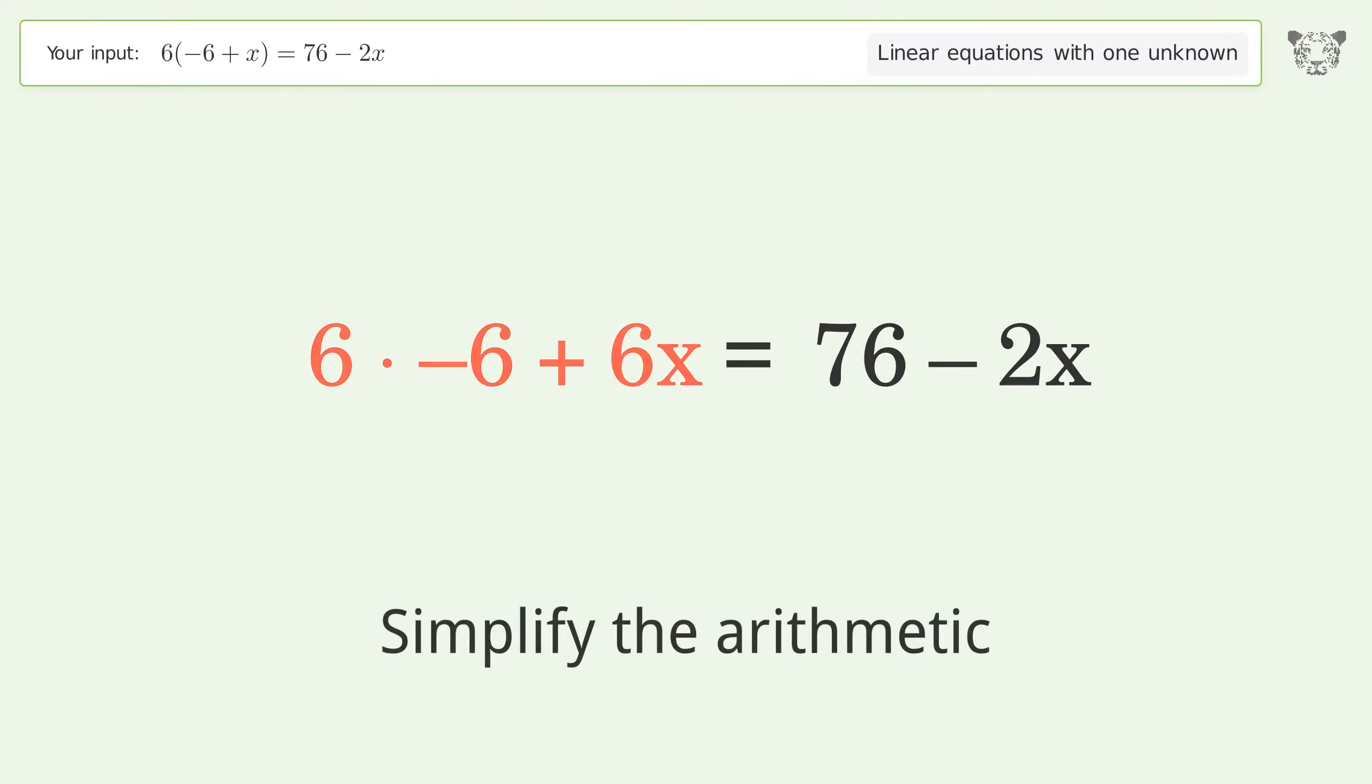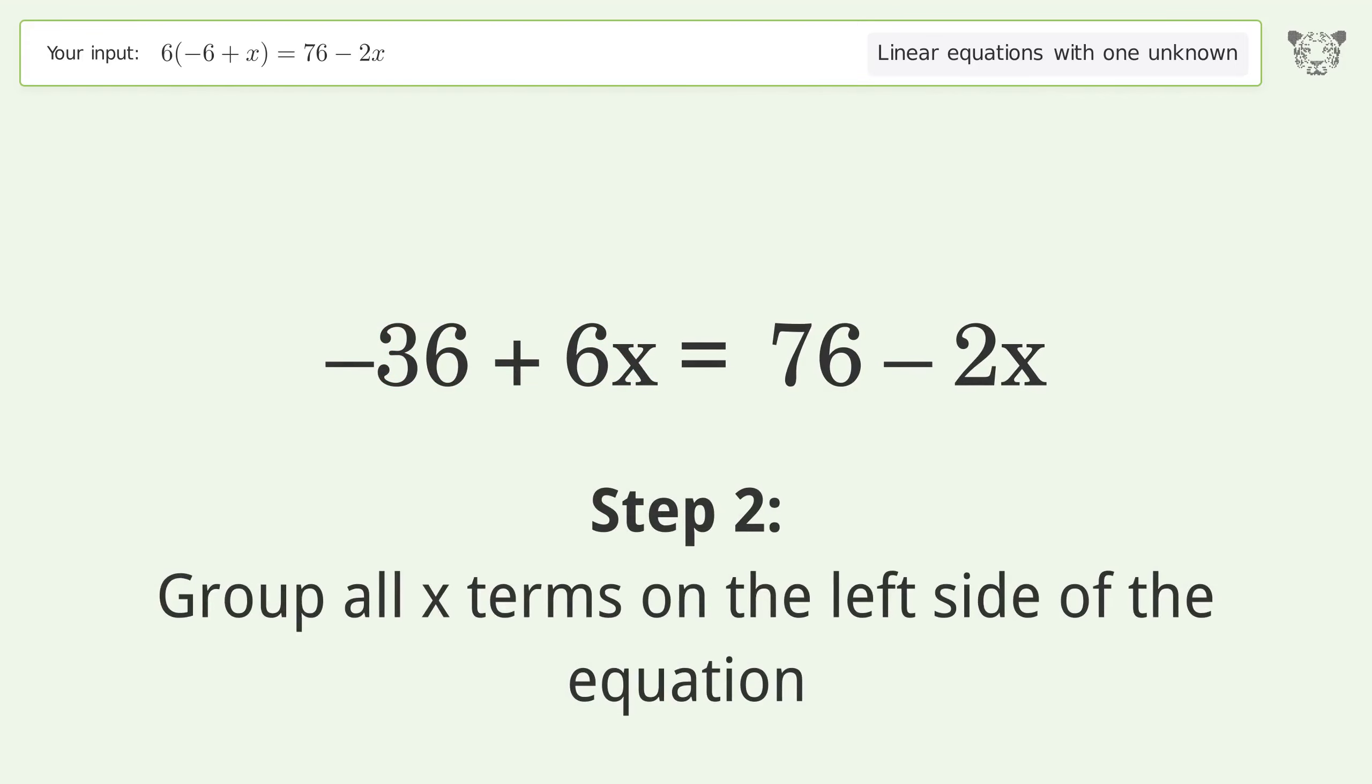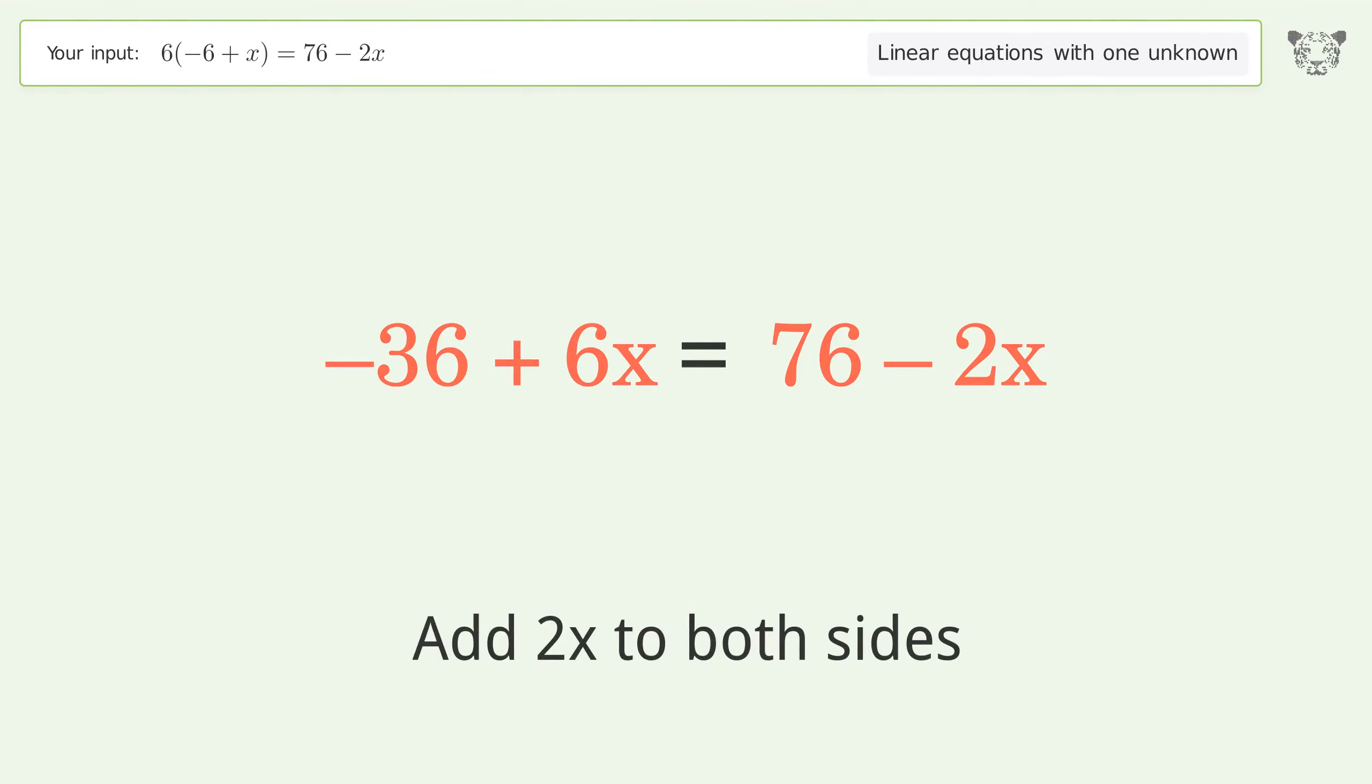Simplify the arithmetic. Group all x terms on the left side of the equation. Add 2x to both sides.